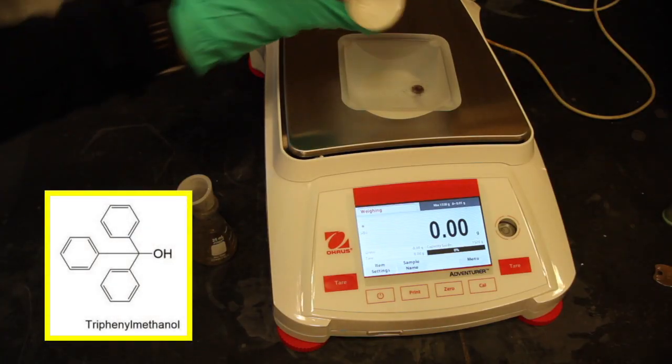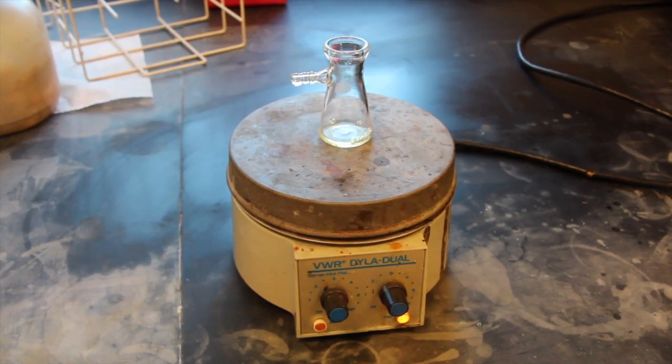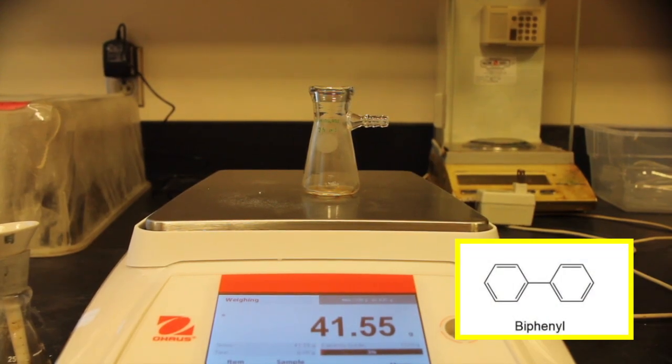Weigh the crude triphenylmethanol. Evaporate the petroleum ether which passed into the filter flask and re-weigh the flask to determine the mass of the biphenyl.